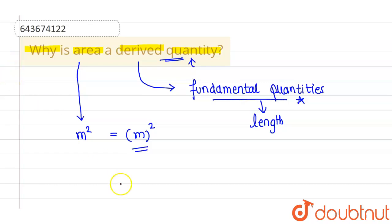Now, for making area, we are multiplying length with length, so therefore we are getting the area. That's why the area is a derived quantity. I hope you understood, thank you.